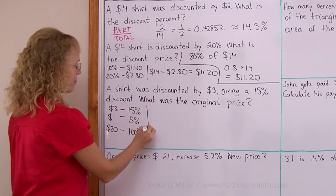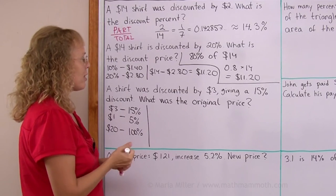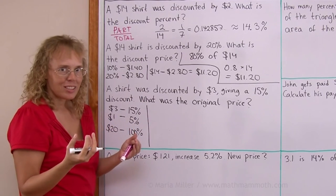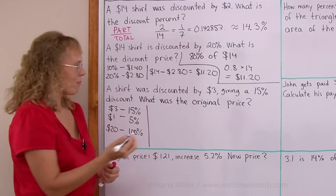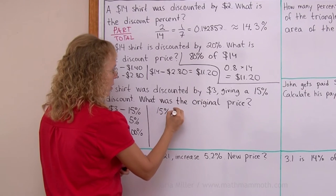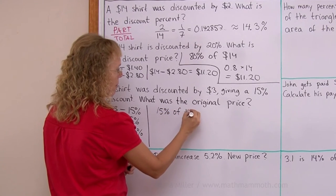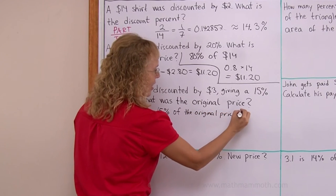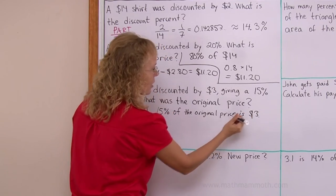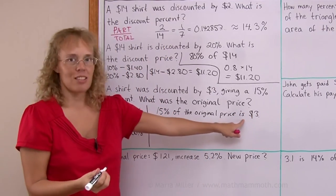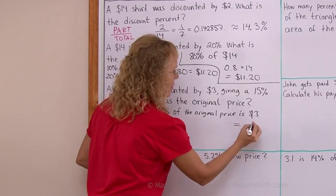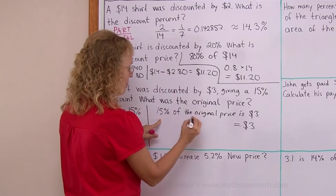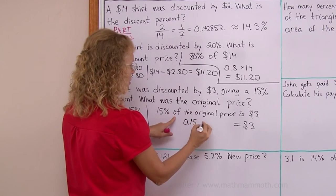And here's another way. And that has to do with the fact that 15 percent of what is that $3? 15 percent of the original price, right? Is $3. You see, this is like an equation here. This is the equal sign. And then 15 percent is of course a decimal number. Of is the times.